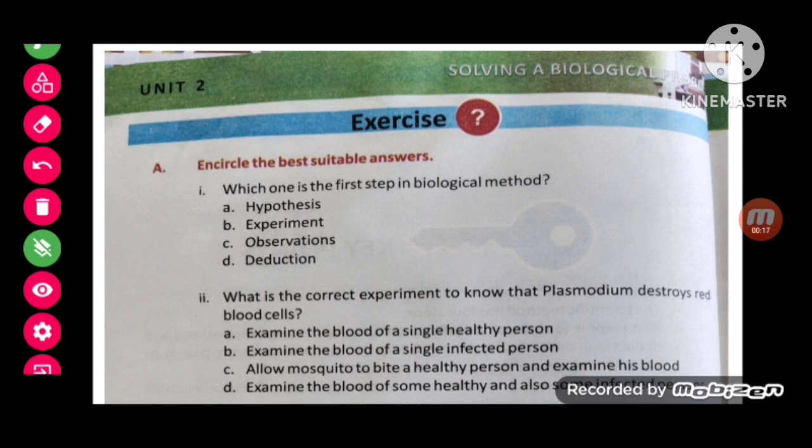MCQ number 1: which one is the first step in biological method? The observation is the first step in biological method. MCQ number 2: which of the following is the correct experiment to know that Plasmodium destroys red blood cells? The correct experiment is to examine the blood of some healthy and some infected persons.